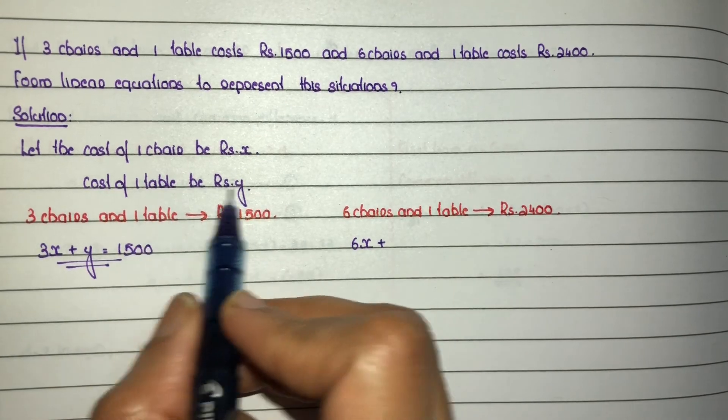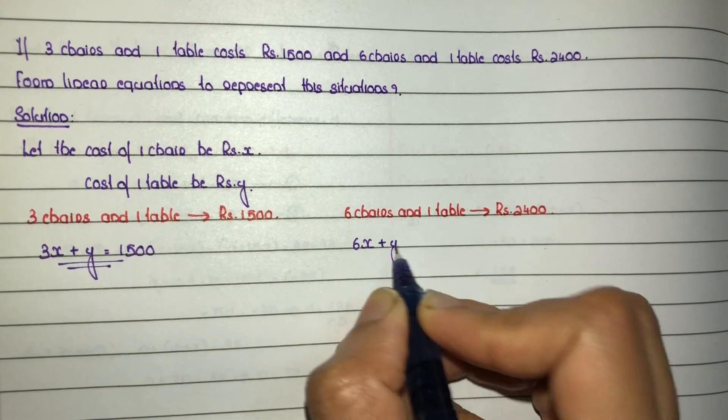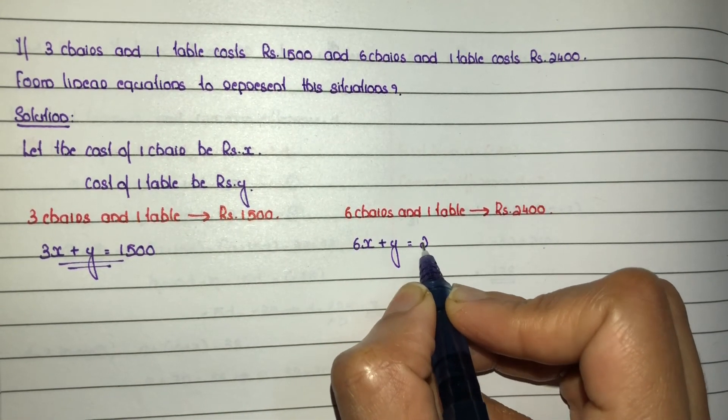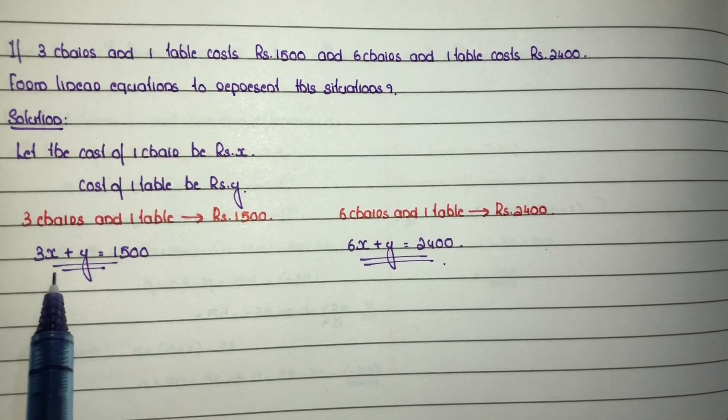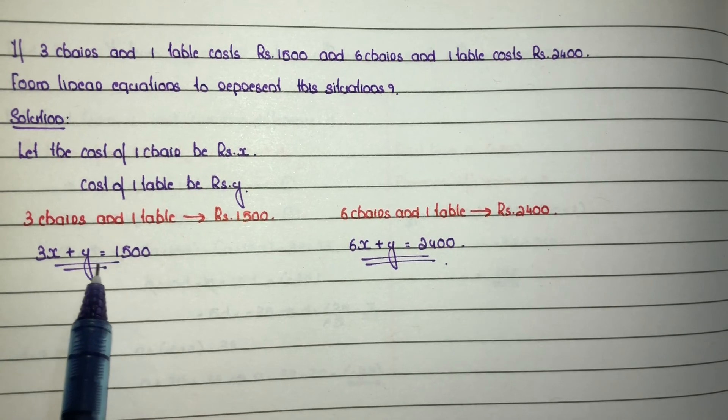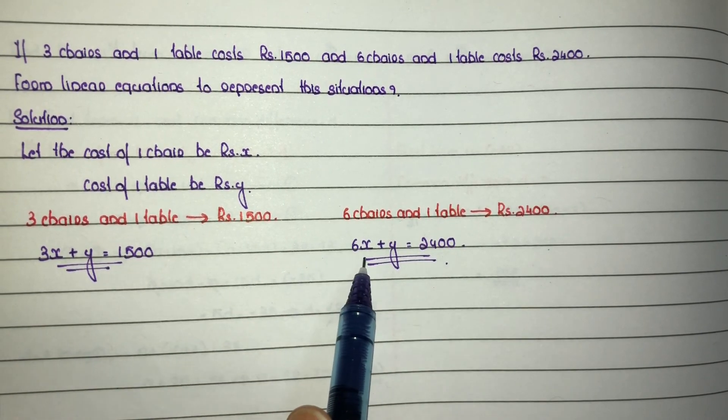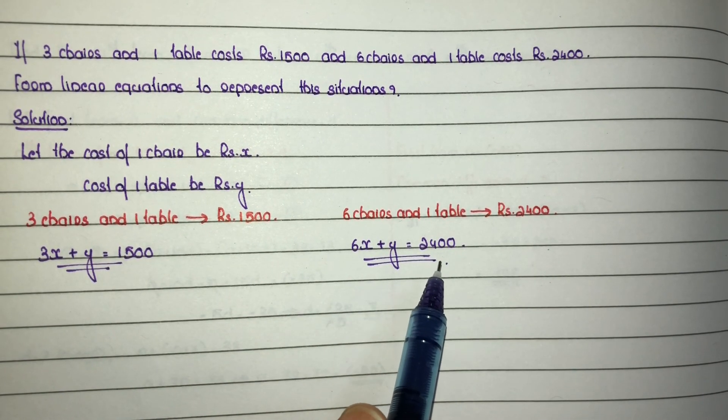One table costs y, so this is equal to rupees 2400. Okay, so the linear equations are: 3x plus y is equal to 1500, and 6x plus y is equal to 2400.